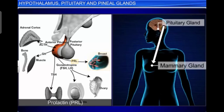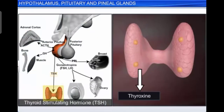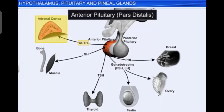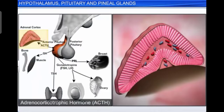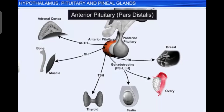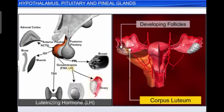Prolactin regulates the growth of the mammary glands and formation of milk, and is also called the maternity hormone. TSH stimulates the synthesis and secretion of thyroid hormones from the thyroid gland. ACTH stimulates the synthesis and secretion of steroid hormones called glucocorticoids from the adrenal cortex.